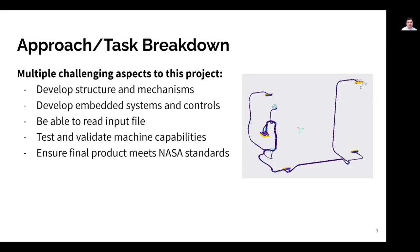The team determined a list of challenging aspects of this project. Other than the obvious need to develop the structure mechanisms as well as the embedded systems of the machine, we also identified the need to read an input harness file, as well as the need to develop testing and validation methods for our machine capabilities. Finally, we needed to ensure that the wire harness that our machine produced met all NASA workmanship standards.